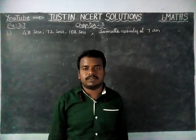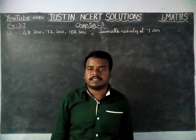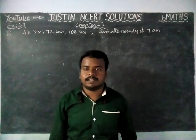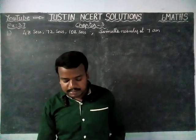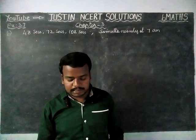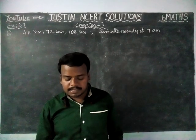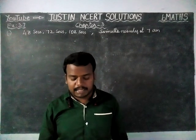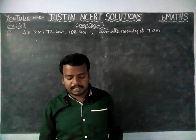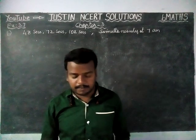Hi students, welcome to Justine NCD Solutions. In this video we are going to see 6th Maths Chapter 3 Exercise 3.7, 6th Question. The question is: the traffic lights at 3 different road crossings change after every 48 seconds, 72 seconds, and 108 seconds respectively. If they change simultaneously at 7am, at what time will they change simultaneously again?